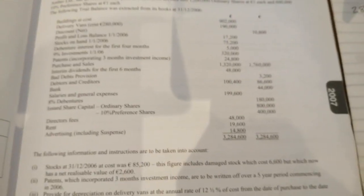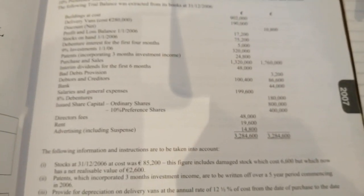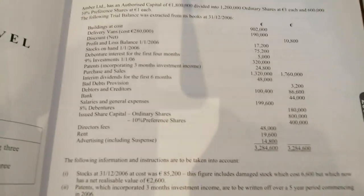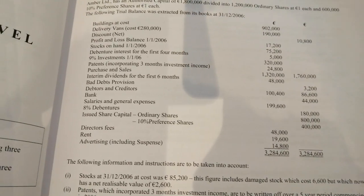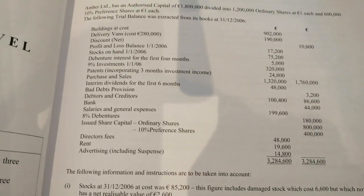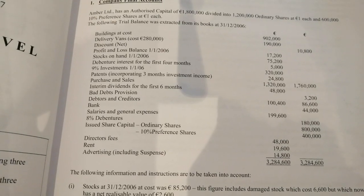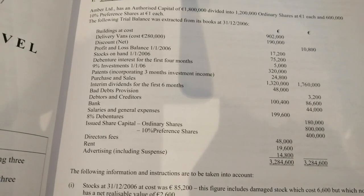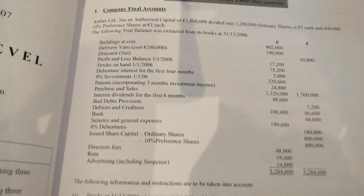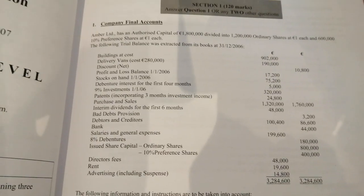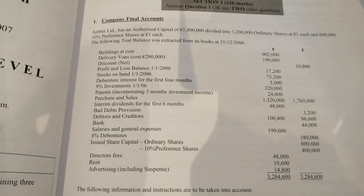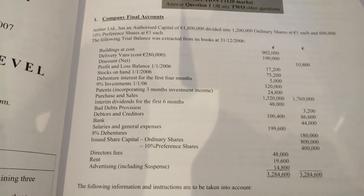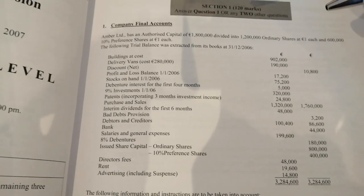Hi all. As requested earlier, I'm just going to go through the investment income from the 2007 question one. I wasn't sure if it was the investment income in the trading profit and loss or in the balance sheet, so I'm just going to do both of them — investment income for the year and investment income due at the end of the year.